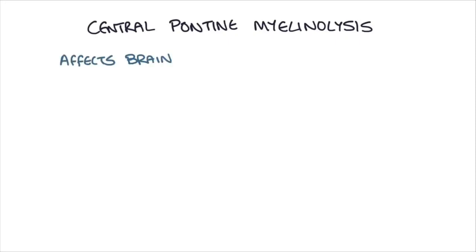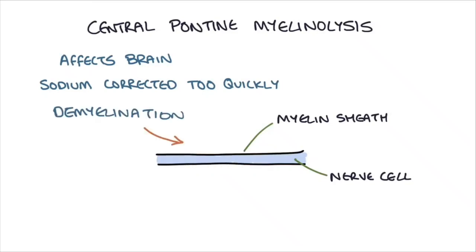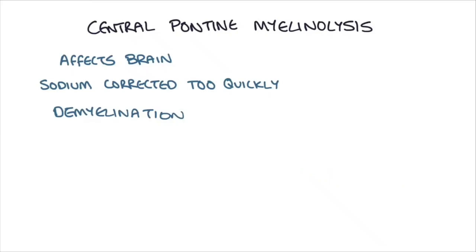The final thing is just to mention a condition called central pontine myelinolysis. This is a disorder that affects the brain when sodium is corrected too quickly. What happens is the myelin sheath of the nerve cells in the brain becomes damaged by the quick change in sodium. The osmotic balance in that myelin sheath becomes disrupted and it causes demyelination of the nerve cells.